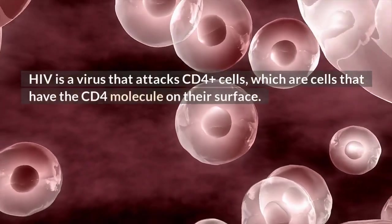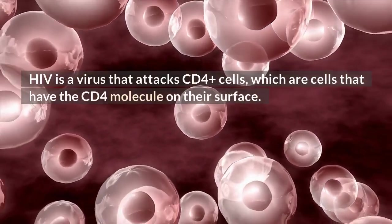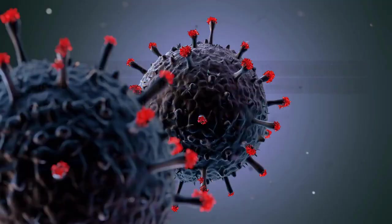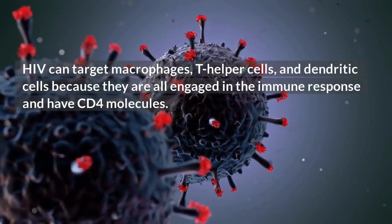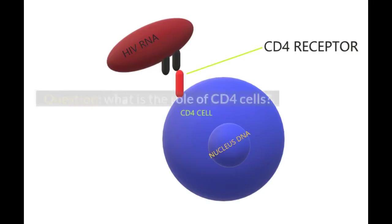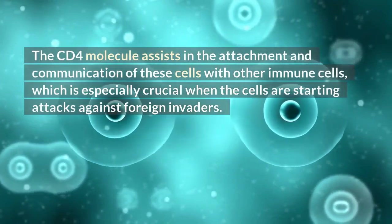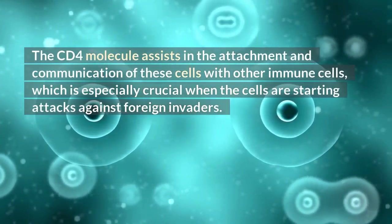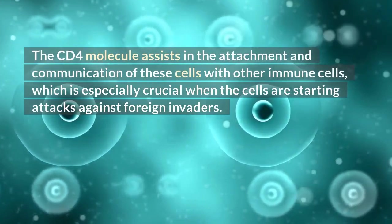HIV is a virus that attacks CD4+ cells, which are cells that have the CD4 molecule on their surface. HIV can target macrophages, T helper cells, and dendritic cells because they are all engaged in the immune response and have CD4 molecules. What is the role of CD4 cells? The CD4 molecule assists in the attachment and communication of these cells with other immune cells.